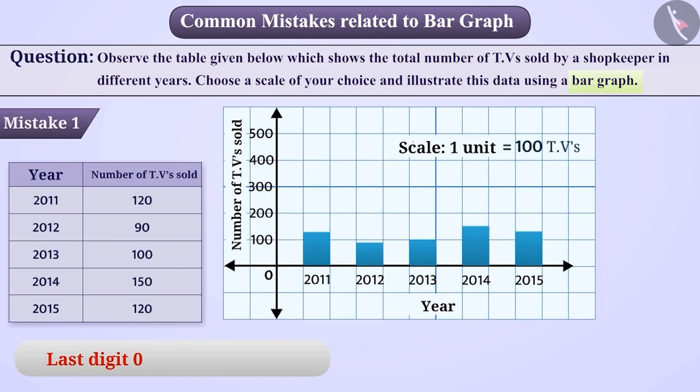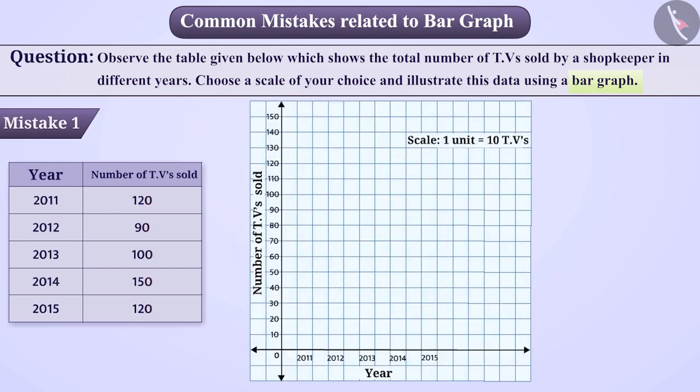Here, we observe that all the numbers are multiples of 10. So, we can take 1 unit length equal to 10 TVs. This will give us the length of the bars. Therefore, in this way, we can easily draw a bar graph.